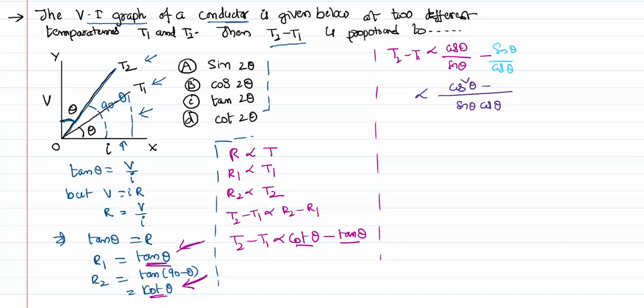I need to simplify this further because we have the sin 2θ formula, which is 2 sin θ cos θ. I can multiply this equation with 2 in the numerator: cos squared θ minus sin squared θ.